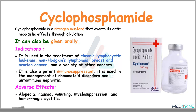The next important drug is cyclophosphamide. Cyclophosphamide is a nitrogen mustard which works by exerting its antineoplastic effects through the alkylation process. It can be administered orally and is used in the treatment of chronic lymphocytic leukemia, non-Hodgkin's lymphomas, breast and ovarian cancers, and a variety of other solid tumors. It is also a potent immunosuppressant and is therefore used in the management of rheumatoid disorders and autoimmune nephritis. Important side effects include alopecia, nausea and vomiting, myelosuppression, and hemorrhagic cystitis.